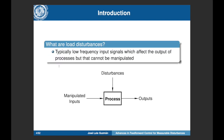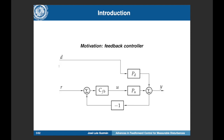As is well known, disturbances are external signals that affect the process output and move it away from the reference. These signals cannot be manipulated, and sometimes we can measure them and sometimes we cannot. In this talk we consider that we can measure the disturbances, as is typical in process industry. This is the feedback control loop we will use, where pd is the transfer function relating the process output with the disturbance, pu relates it with the control signal, and we use a PID or PI controller.